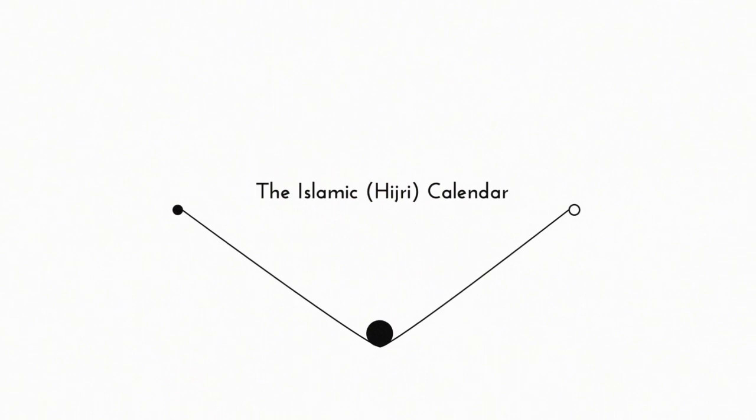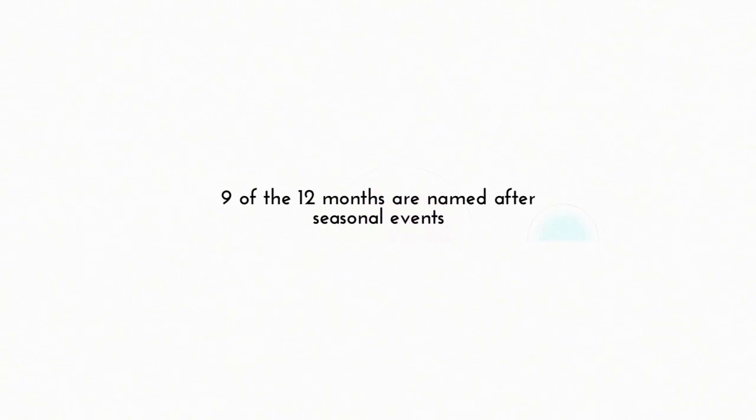If we consider the meanings of the months of the Islamic calendar, one striking pattern emerges: nine of the twelve months can be linked to specific seasons.